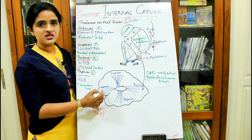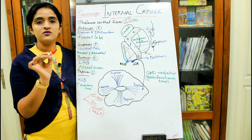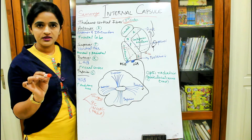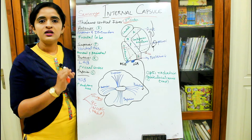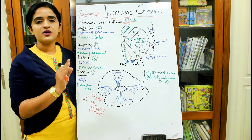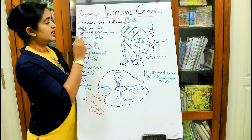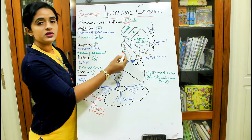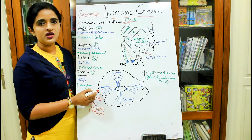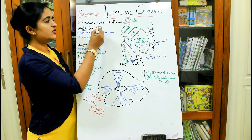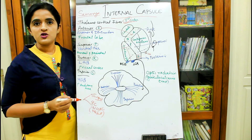For each thalamic radiation, we need to know: from which part of the thalamus it arises, to which part of the cortex it goes, and through which part of the internal capsule it passes. The anterior thalamic radiation arises from the anterior and dorsomedial nuclei of the thalamus, projects to the frontal lobe, and passes through the anterior limb of the internal capsule.